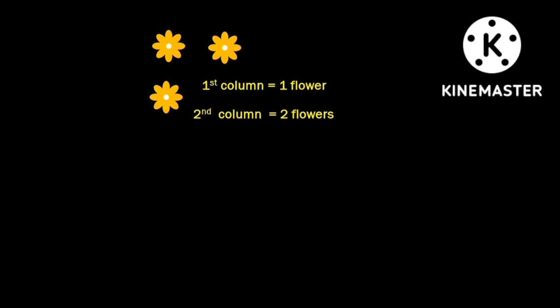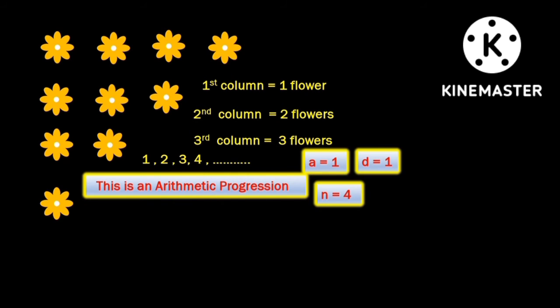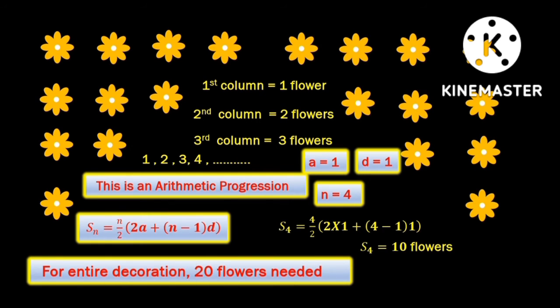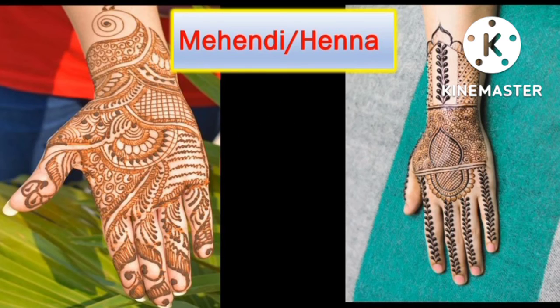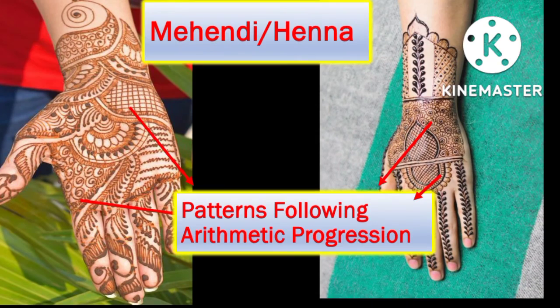If the first column has one flower and the number of flowers in each successive column increases by one, this is an arithmetic progression. Using the sum of n terms formula, we can find the number of flowers needed for one side of the decoration and then simply double it to find the total number of flowers. Intricate shapes used in henna designs look even more fabulous when arranged in increasing or decreasing arithmetic progression.